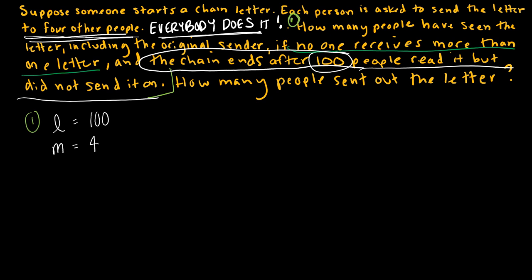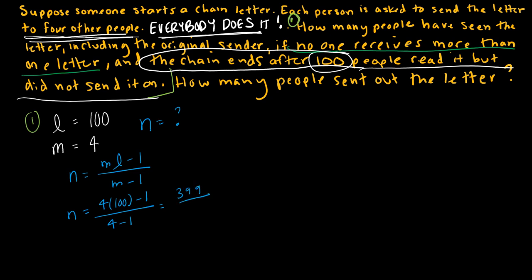I'm trying to find how many people have seen the letter, which is the total number of vertices n. Using the formula n = (ml − 1)/(m − 1), I get n = (4 × 100 − 1)/(4 − 1) = 399/3 = 133. So 133 people have seen the letter, including the original sender.